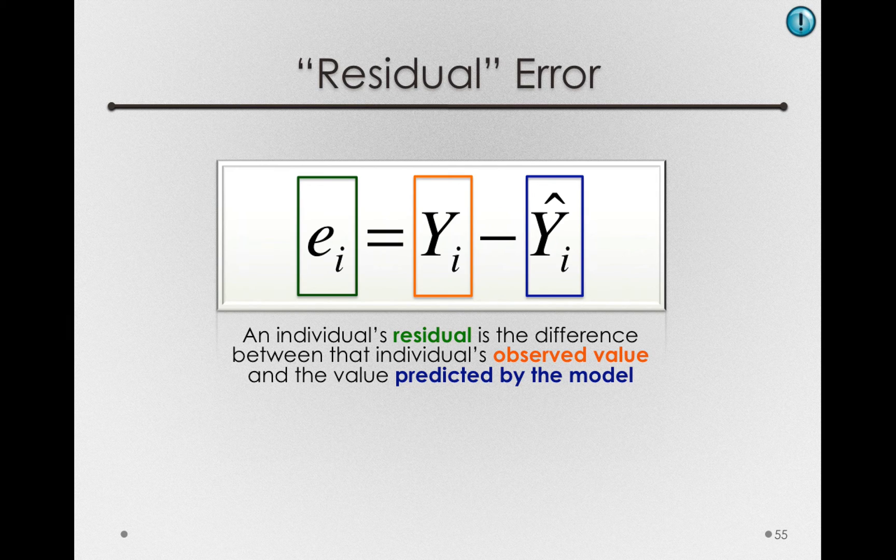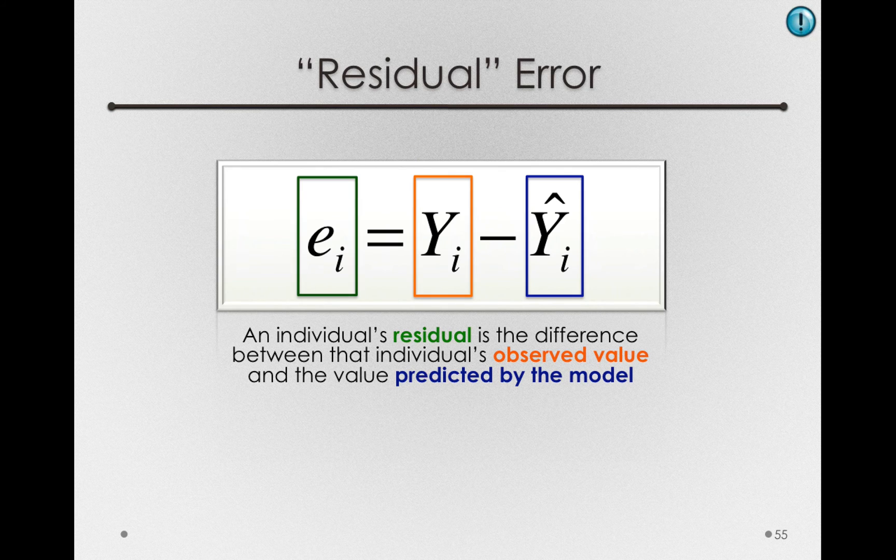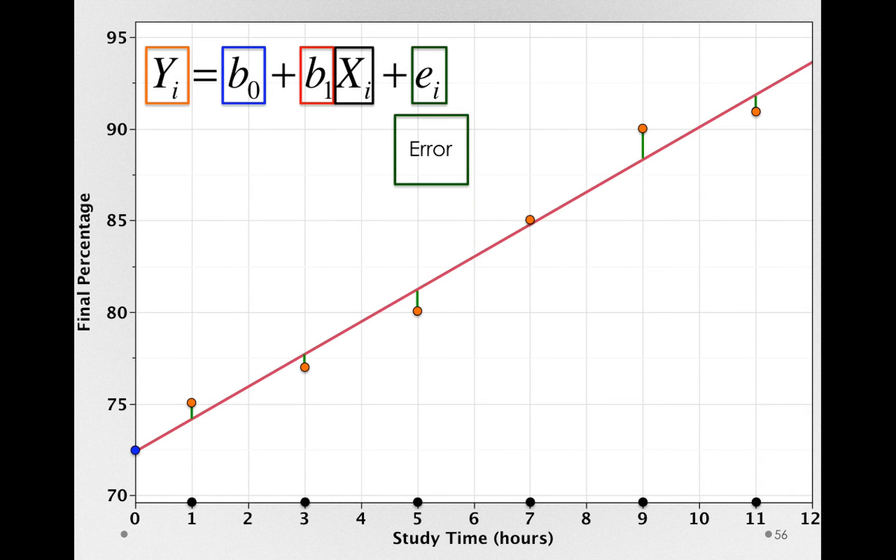Previously, what was predicted for each person was an individual's group mean. In this case, we're predicting for an individual a point on this line. So error is still the same concept, but it's simply deviations from a line when we're talking about a regression model, where in a mean structure model it's deviation from a group mean.